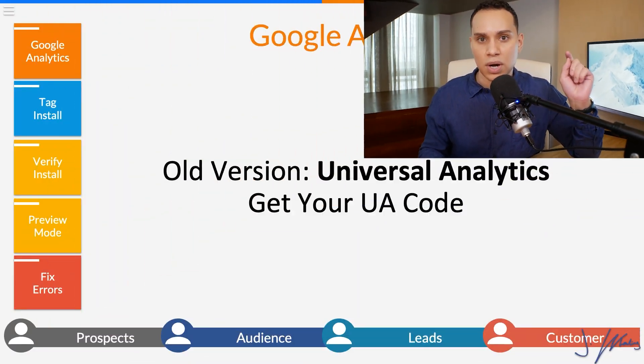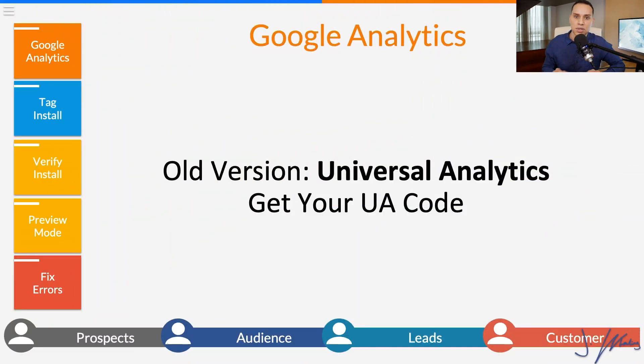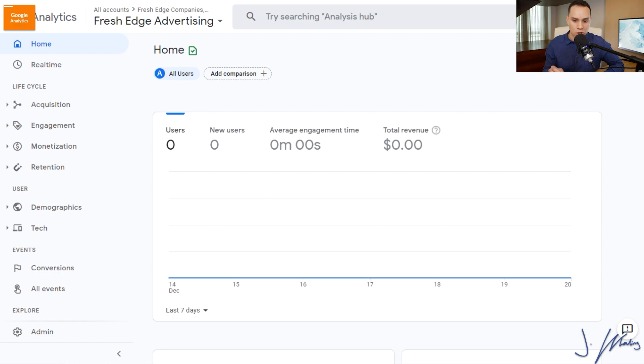Timestamps below if you want to skip over the old version of analytics and jump straight into Google Analytics 4 for the measurement ID. So inside of your Google Analytics account, when it comes to the old version — Universal — which I still recommend installing even if you are just new to Google Analytics, we're going to look for something called your UA code.